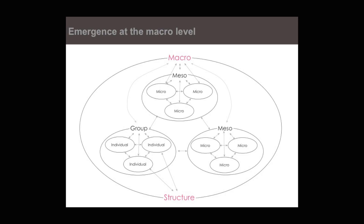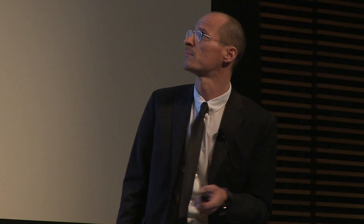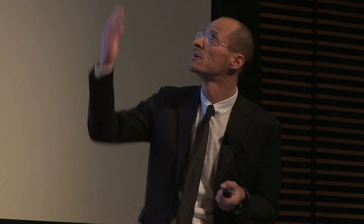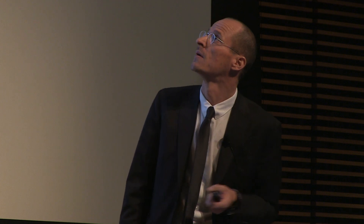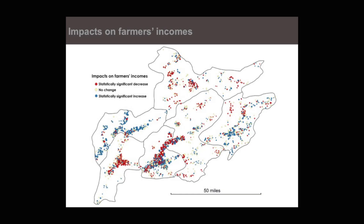Resulting from these interactions are certain dynamics and patterns on a macro level. This idea of social simulation is very close to what we call emergence, and emergence is a key concept in complexity. But the problem is that we look at only emergence between individuals interacting with each other and an emerging macro structure.